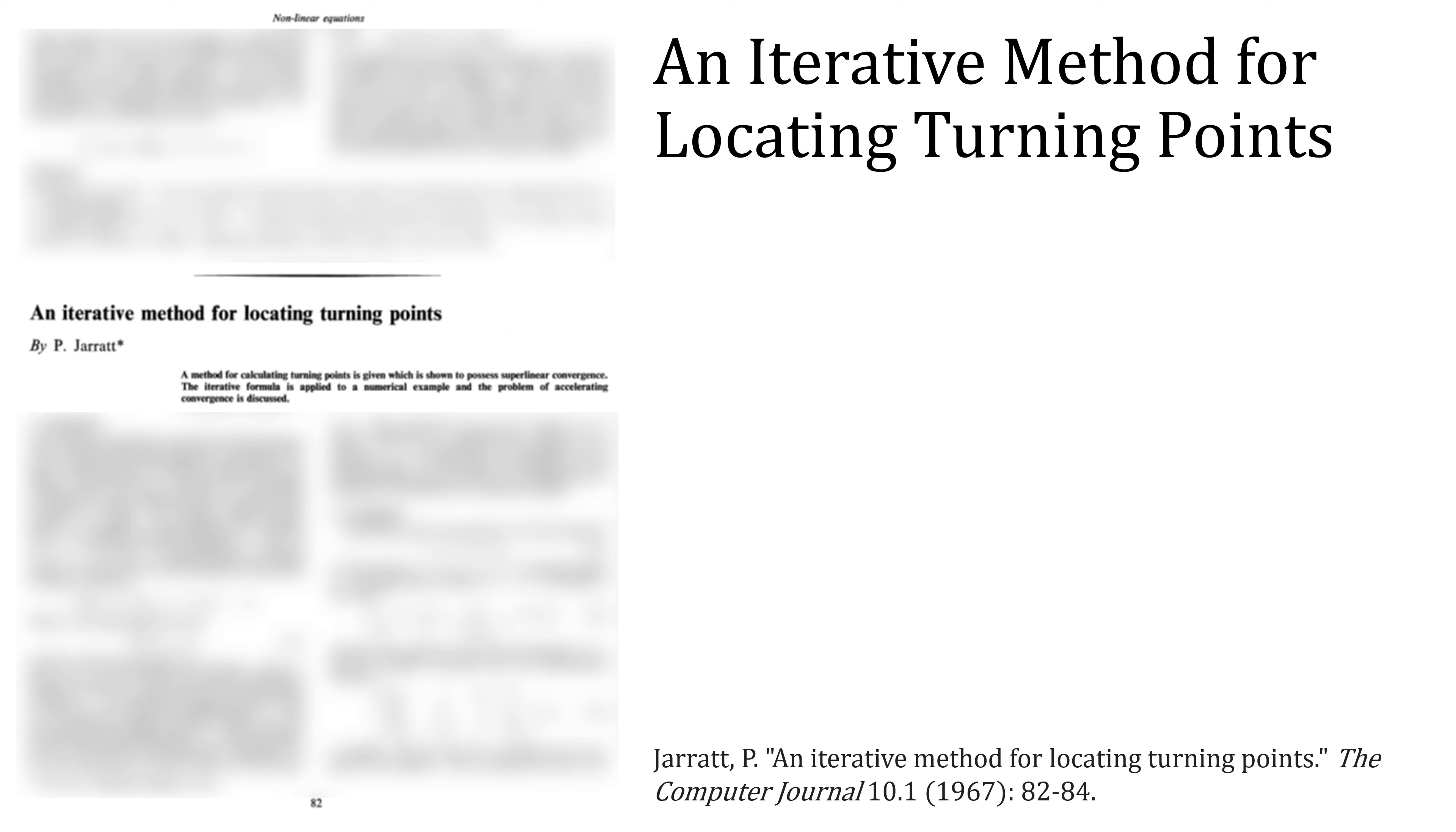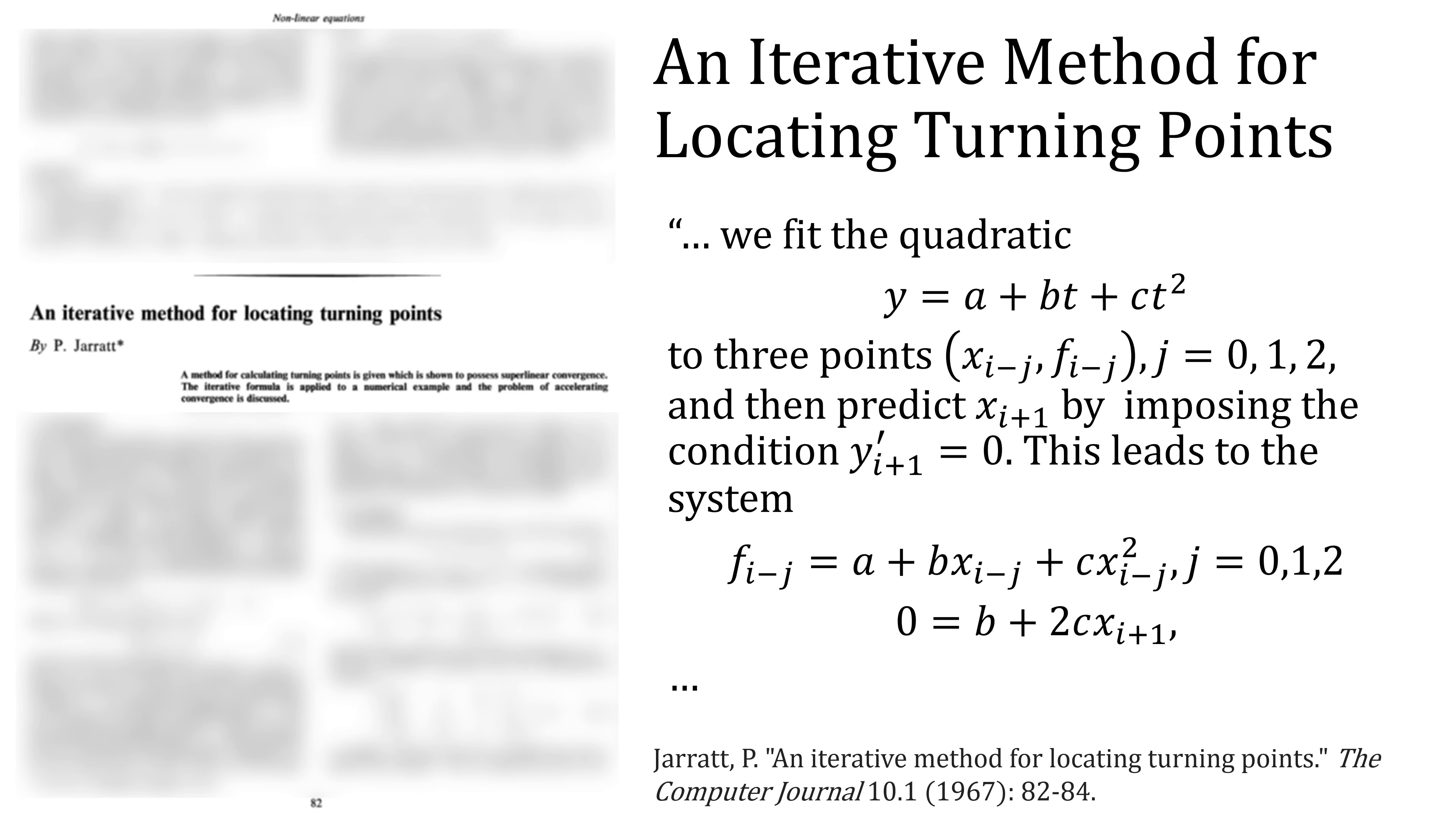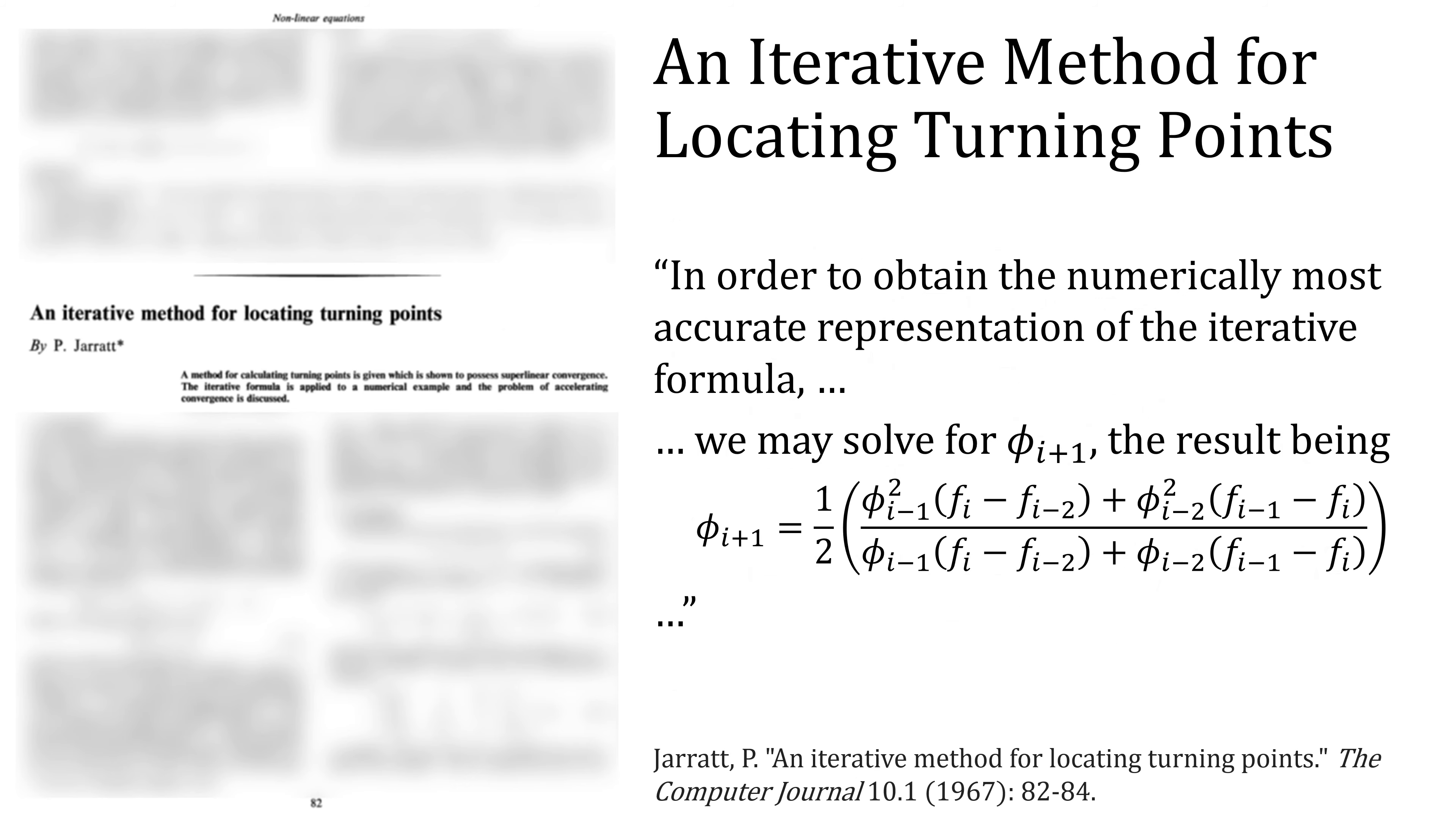This is the paper that Brent was referring to, Jarratt's an iterative method for locating turning points. We fit the quadratic to three points and then predict x sub i plus one by imposing the condition that y prime at i plus one equals zero. This leads to the system. In order to obtain the numerically most accurate representation of the iterative formula, we may solve for phi sub i plus one, the result being this equation. This is known as Jarratt's method.